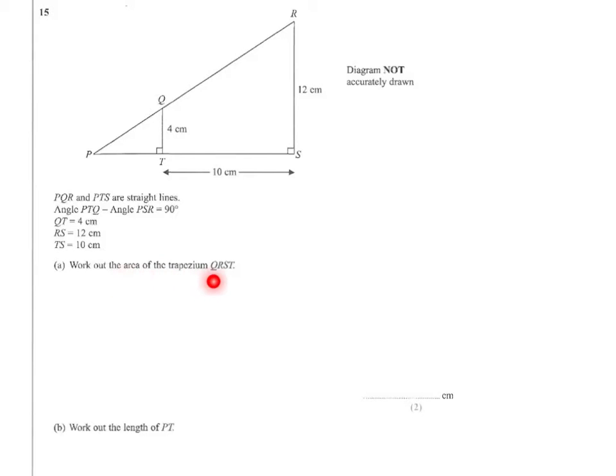We've been asked to work out the area of the trapezium QRST. We can see that the two parallel sides that we refer to as A and B are 4 and 12.